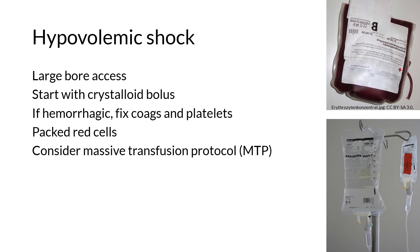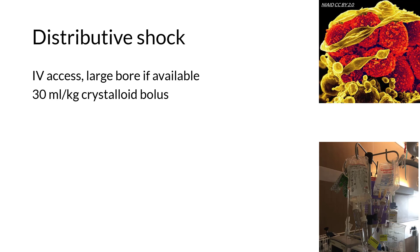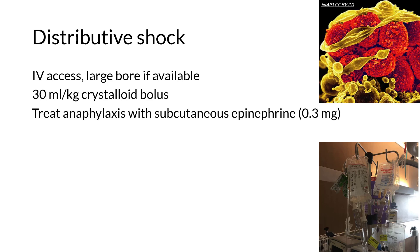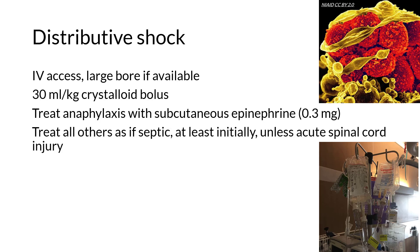Consider invoking your institution's massive transfusion protocol in hemorrhagic shock. In distributive shock, IV access is important and a large bore is favored when possible. A 30 mL per kg crystalloid bolus is standard, especially in sepsis. It's important to identify patients in anaphylactic shock quickly due to their chance of rapid decompensation from both cardiac and respiratory problems — these patients immediately need 0.3 mg of epinephrine subcutaneously. Treat everyone else as if they are septic initially, unless the patient has an acute spinal cord injury.